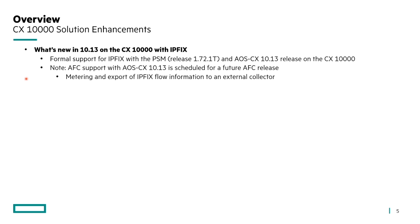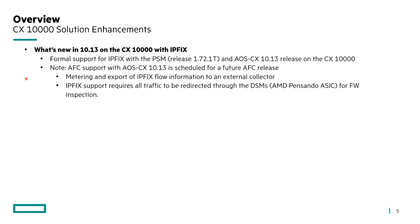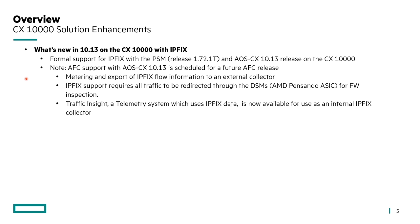Metering and export of IP fix flow information to an external collector is one of the functional capability enhancements. IP fix support requires all traffic to be redirected through the DSMs — the AMD Pensando A6, also known as DPUs — for firewall inspection. That's where the IP fix metering process takes place. Traffic Insight, a telemetry system using IP fix data, is now available at POC/beta level until the 10.13.1000 release, and is available for use as an internal IP fix collector.